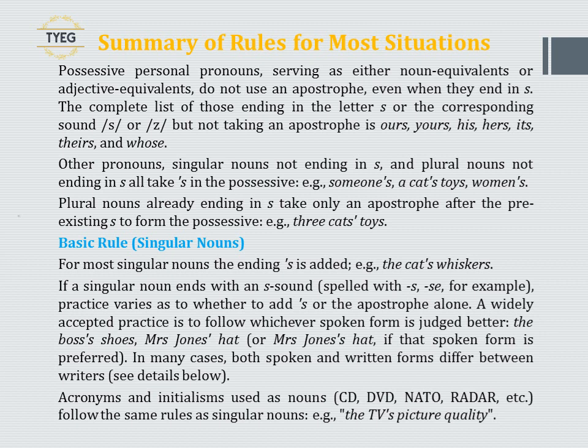Plural nouns already ending in S take only an apostrophe after the pre-existing S to form the possessive — for example, 'three cats' toys'.